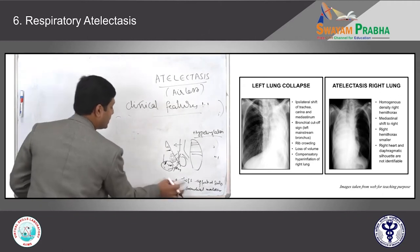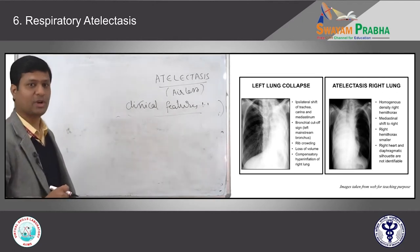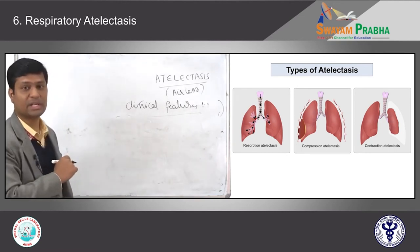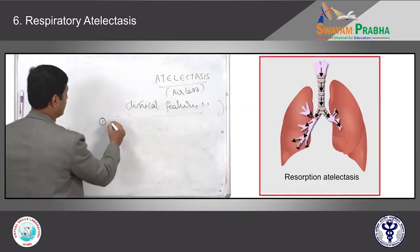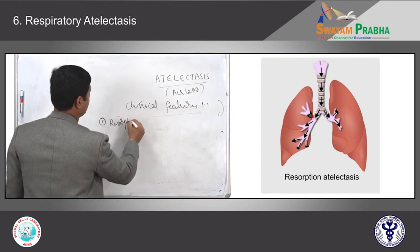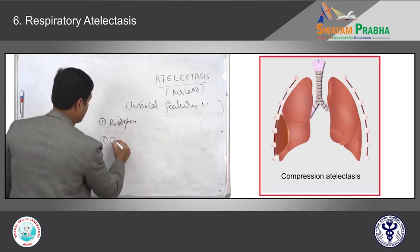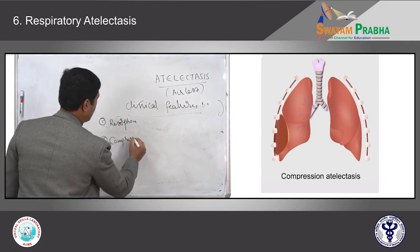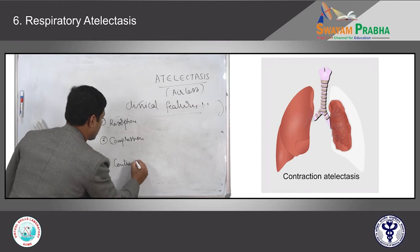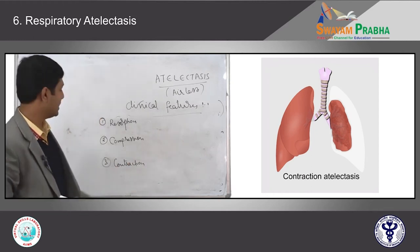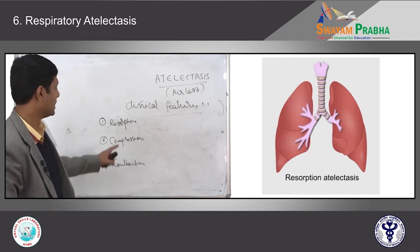After seeing radiology, let us classify atelectasis. There are three main types, shown in the schematic diagram: the first is resorption atelectasis, the second is compression atelectasis, and the third is contraction atelectasis.